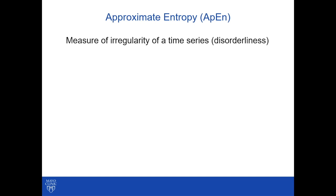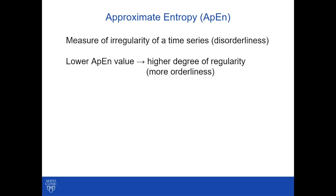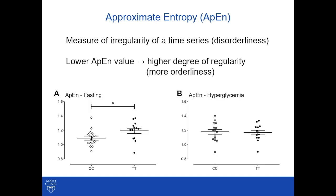Approximate entropy is a measure of irregularity of a time series, and the lower the ApEn value, the higher the degree of regularity — they are more orderly. In fact, the people with the CC genotype, i.e. the diabetes-protective allele, had increased orderliness of insulin pulsatility in the fasting state. This difference was not present in hyperglycemia.